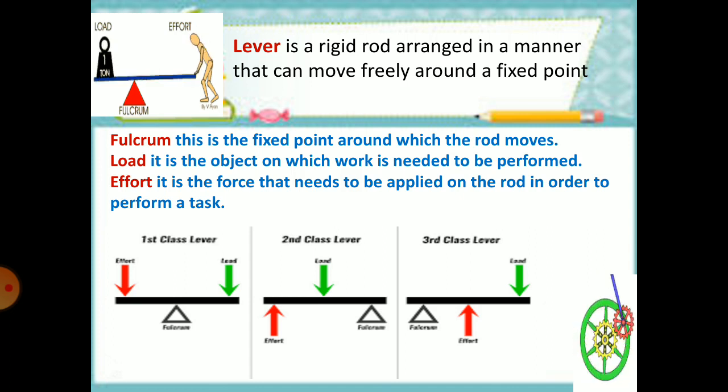It consists of the following three parts. Fulcrum, this is the fixed point around which the rod moves. Load, it is the object on which work is needed to be performed. Effort, it is the force that needs to be applied on the rod in order to perform a task.